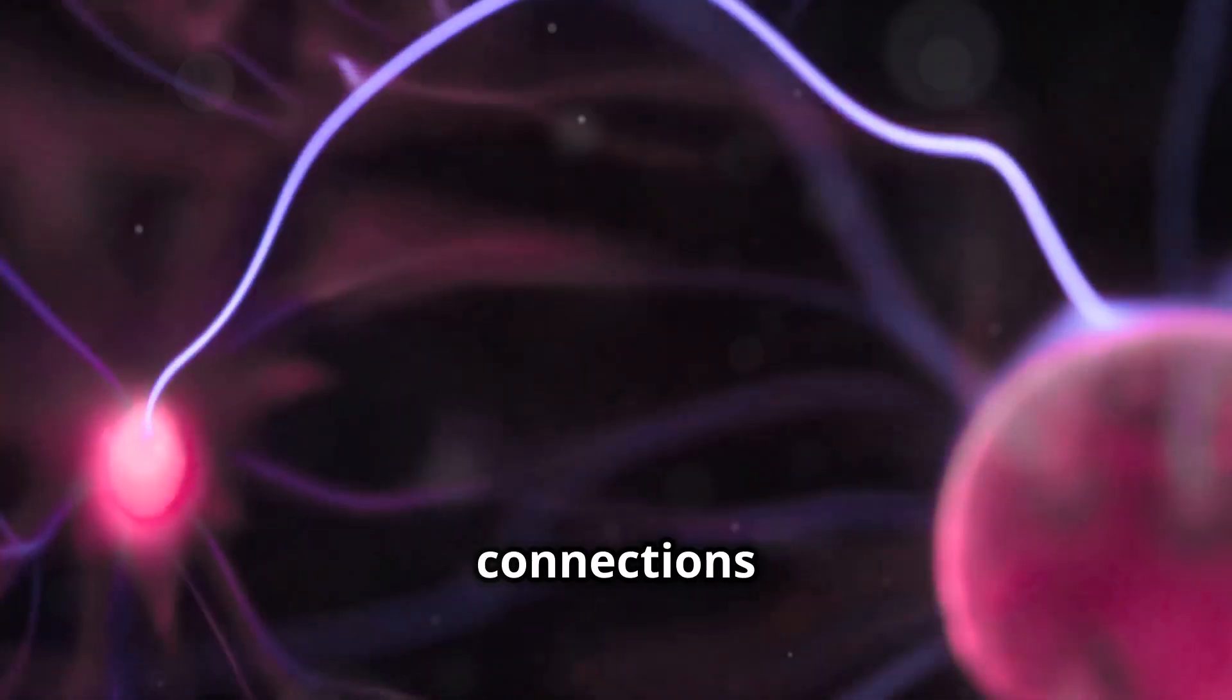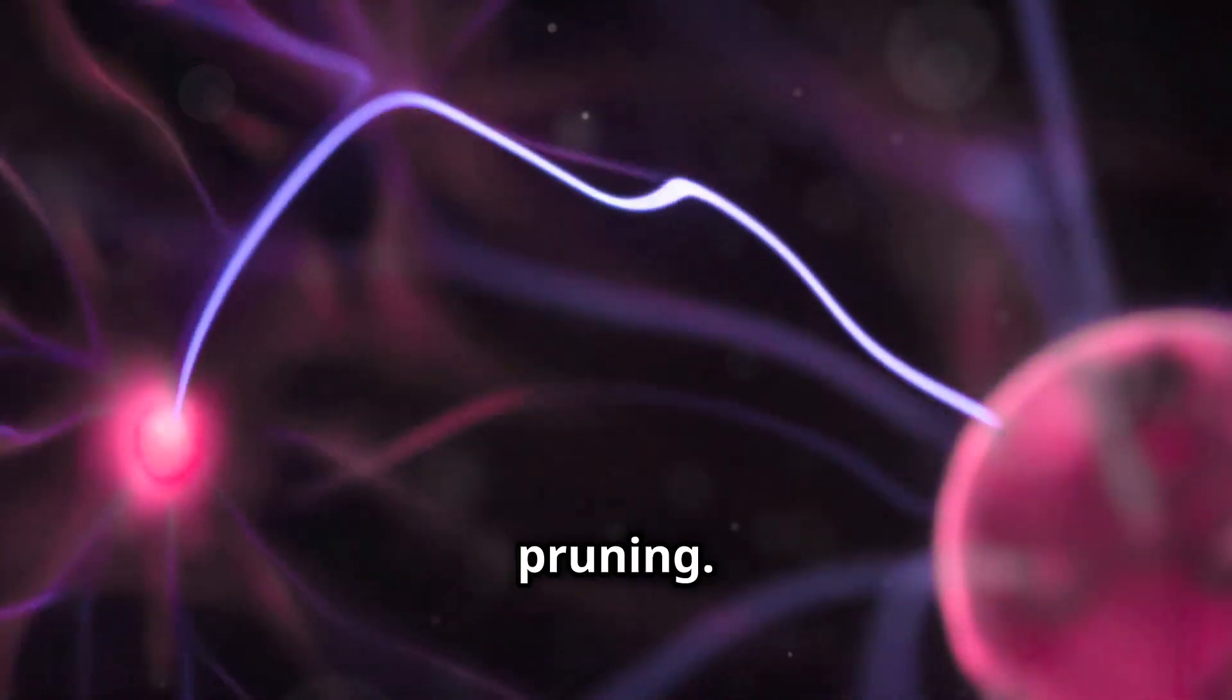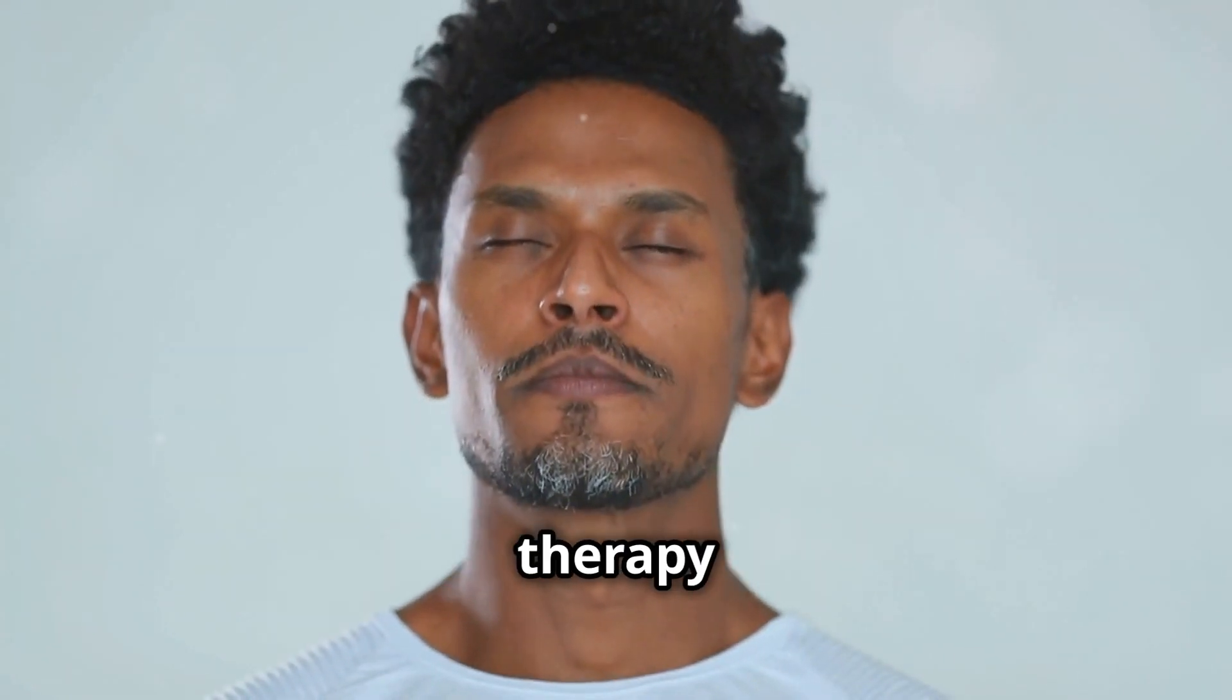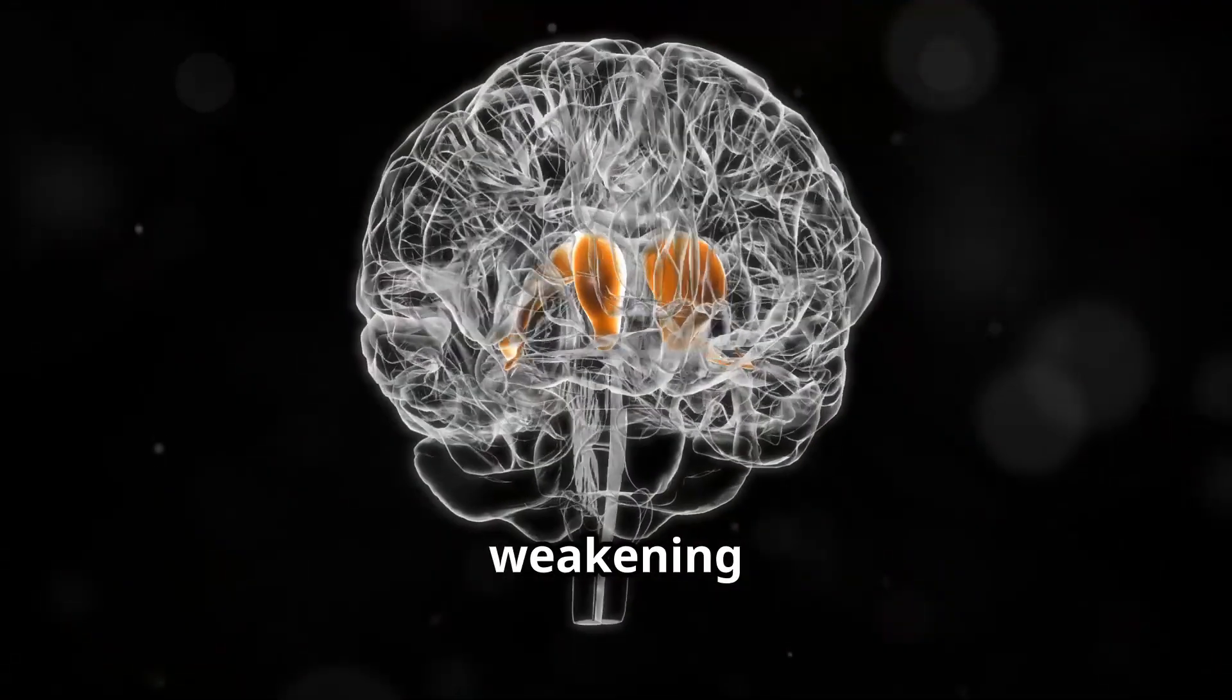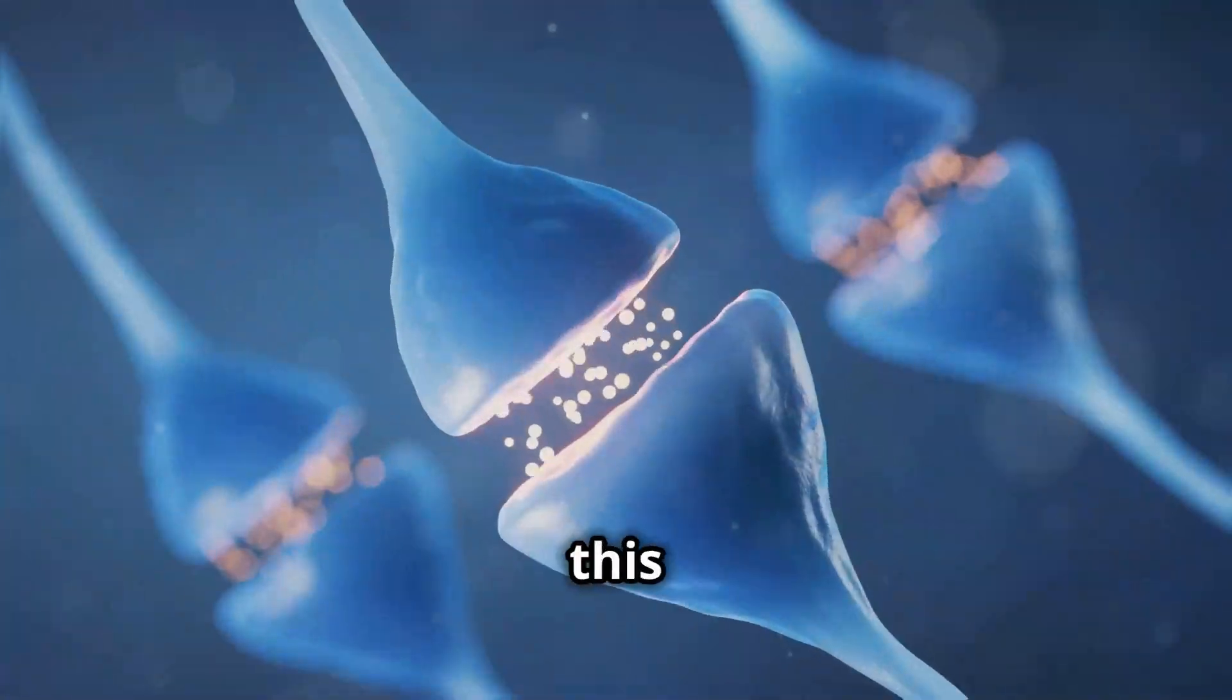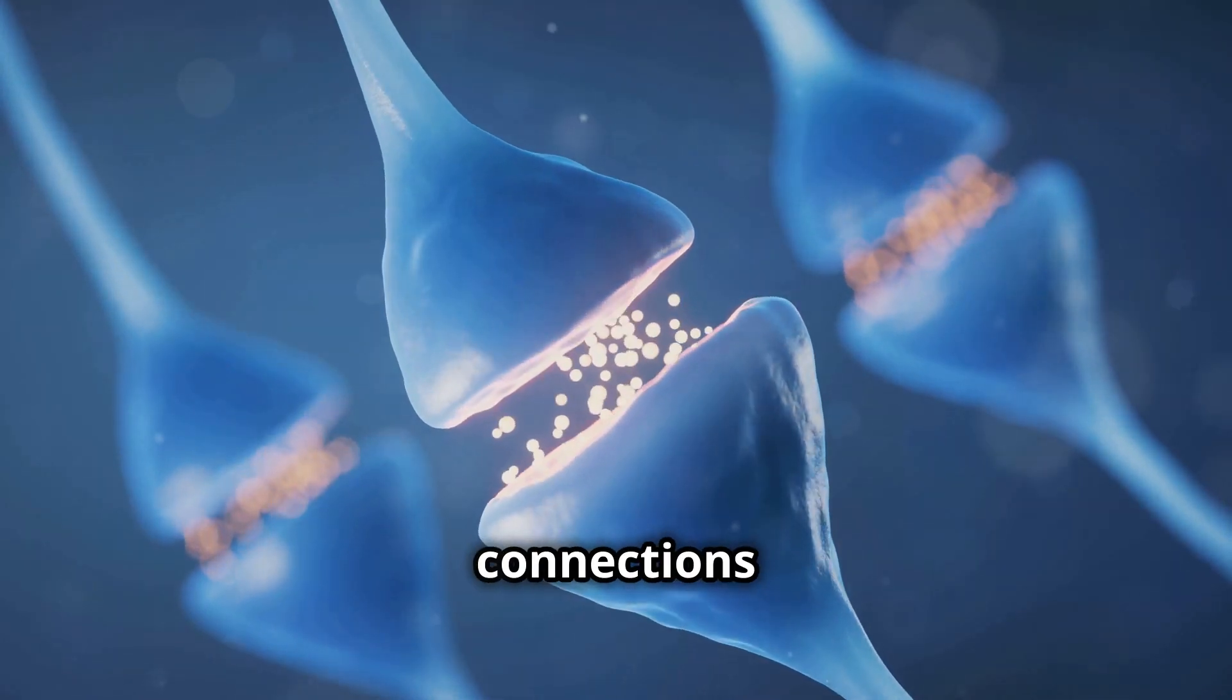Your brain begins to dispose of connections that aren't being used through a process called synaptic pruning. Activities like mindfulness and cognitive behavioral therapy help your prefrontal cortex take control, weakening the old autonomous habits governed by the basal ganglia. During this stage, your brain is laying the foundation for new synaptic connections to form.